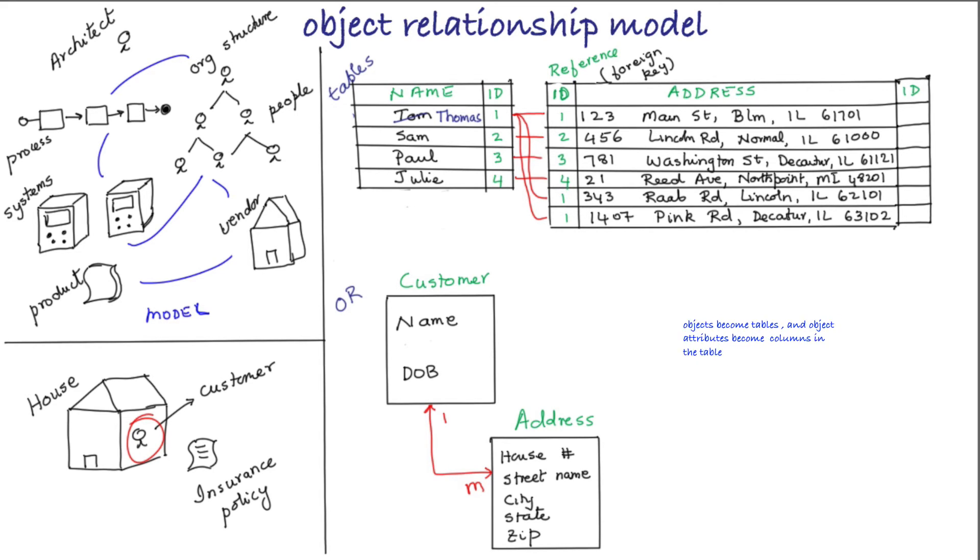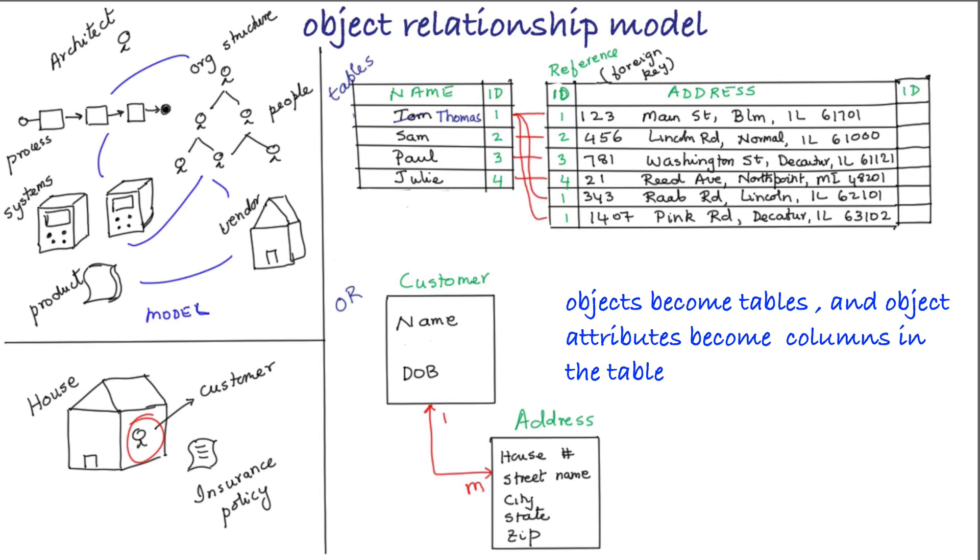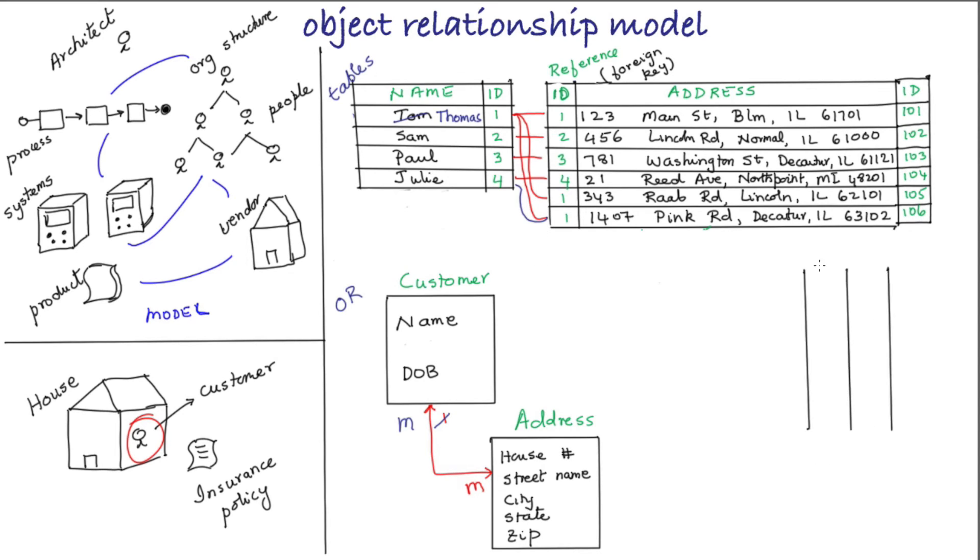You can see how the OR model can directly be translated to a table which can be represented in a relational database. Now let's get a little more complicated. If multiple people can own the same property, then you would want a one-to-many relationship the other way as well. In other words, you want to represent the fact that one customer could own multiple properties and one property can be owned by multiple customers.